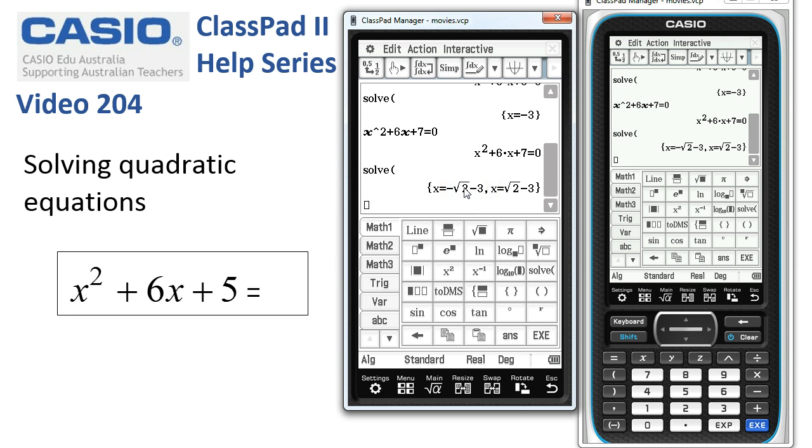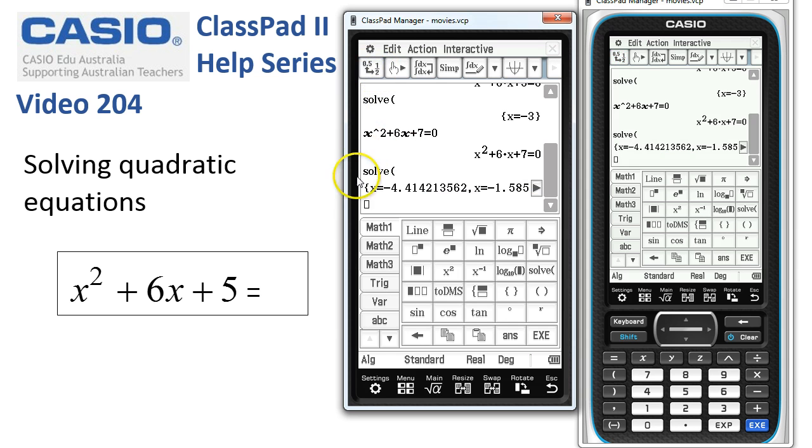Remember, if we wanted the decimal approximations to these solutions, we tap on them and tap the converter, 0.5 to a half, and there are their decimal equivalents.